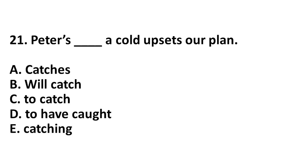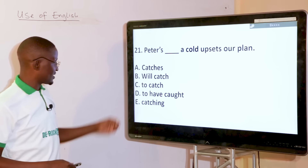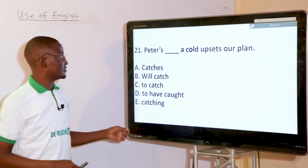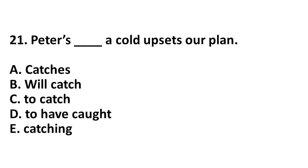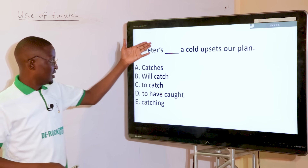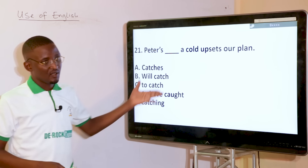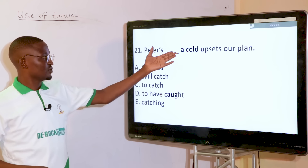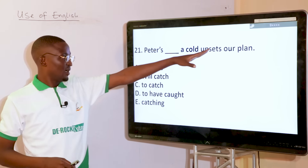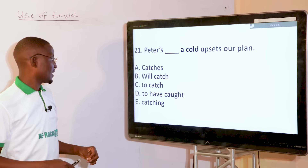Peter's dash a cold upsets our plan. Options: catches, will catch, to catch, to have caught, catching. The answer is catching — option E. This is not a pure verbal sense but functions as a gerund. Peter's catching a cold upsets our plan — rather than putting a finite verb there, we use the gerund form.